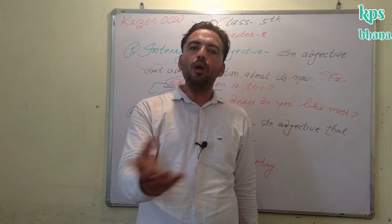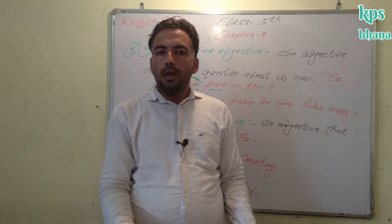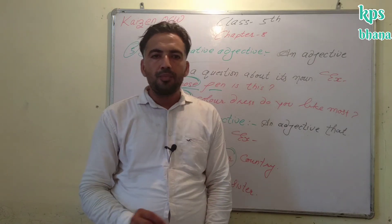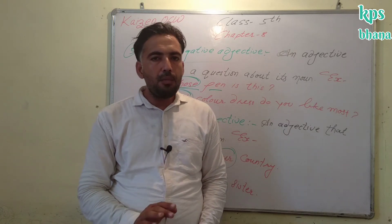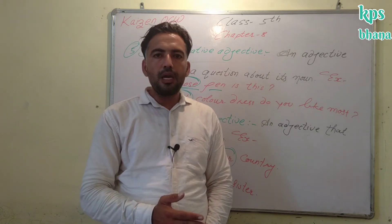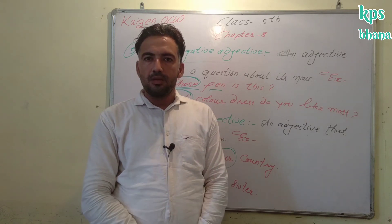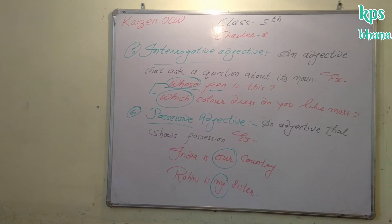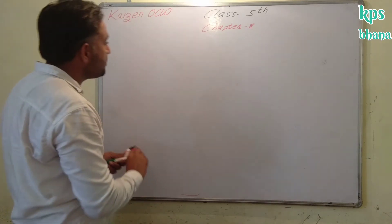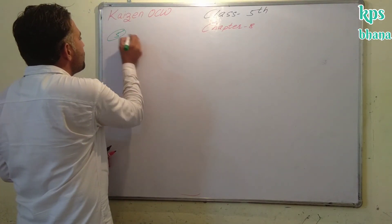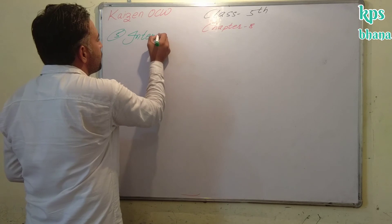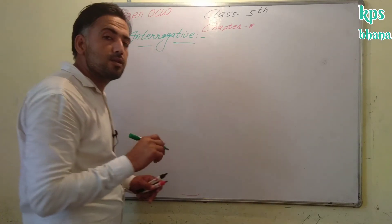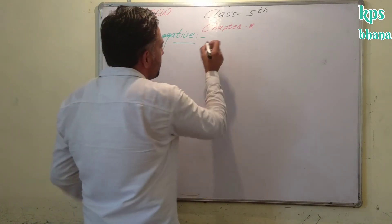So to summarize: describing words are called adjectives. They tell us more about nouns and pronouns. They can be used before or after a noun. There are six kinds of adjective: Adjective of Quality, Adjective of Quantity, Adjective of Number, Demonstrative Adjective, Interrogative Adjective, and Possessive Adjective. Okay, clear? Thanks a lot.